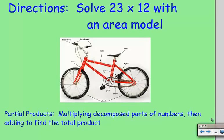So the directions I had for the students were to solve 23 times 12 with an area model. And really what they're doing is they're creating partial products. So they're really just multiplying the decomposed parts of numbers and then adding them up to find the products. So they're doing this in pieces, like how a bike is built in pieces and then you put it all together.